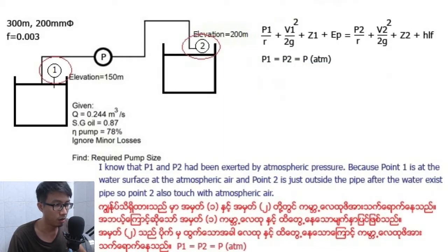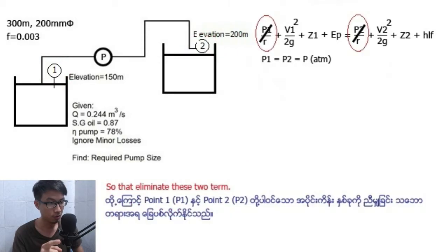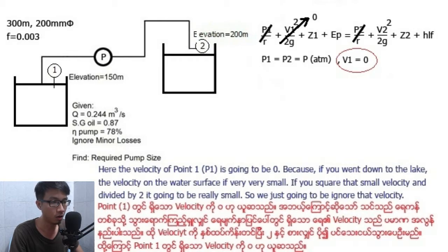I know that Point 1 and Point 2 have been exposed by atmospheric pressure because Point 1 is at the water surface at the atmosphere. Point 2 is just outside the pipe after the water exits the pipe, so Point 2 also touches atmosphere air. So that eliminates these two pressure terms. The velocity at Point 1, V1, is going to be zero because if you go down to the lake, the velocity on the water surface is very very small. If you square that small velocity and divide by 2, it's going to be really small, so we just ignore that velocity.